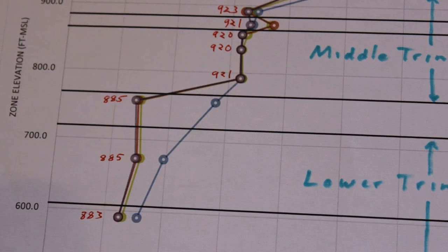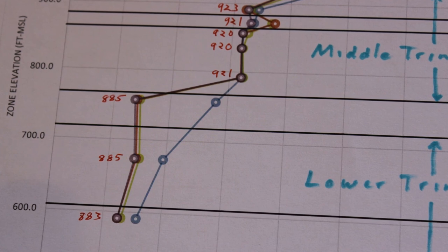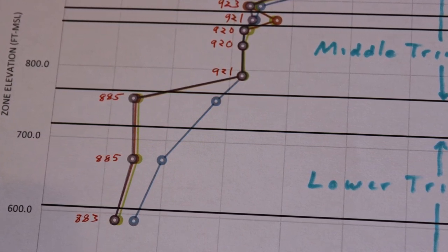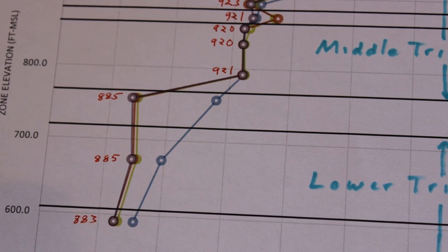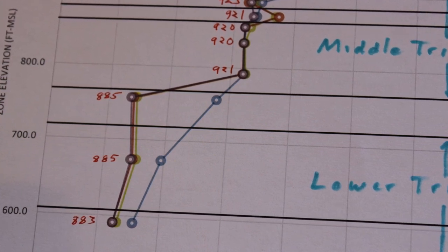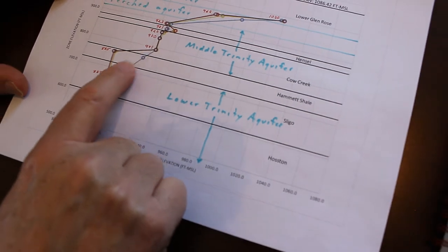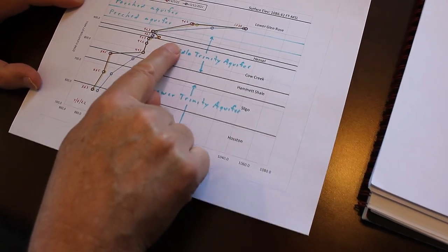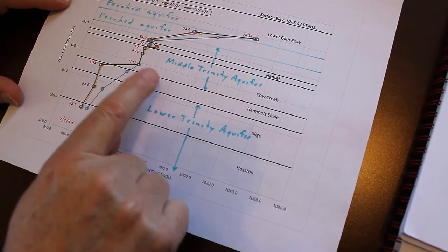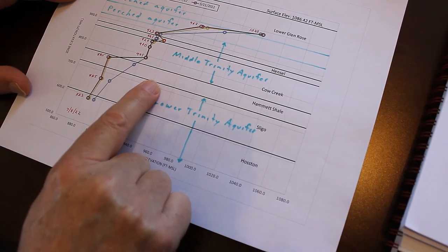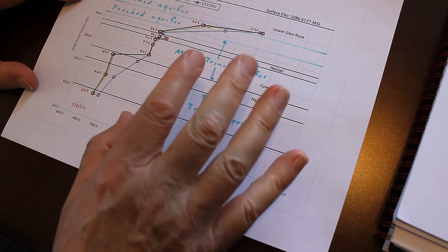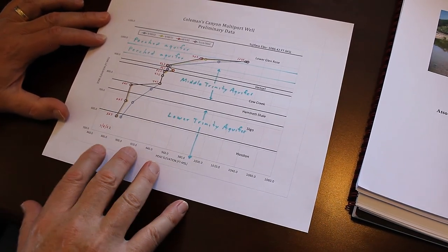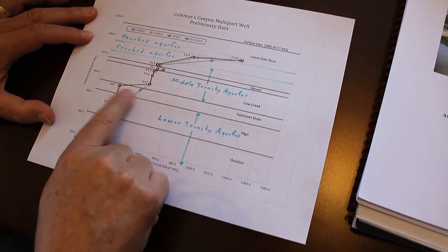Yet as we go down to the Hammett and then particularly into the Sligo of the Lower Trinity, we're seeing elevation values of that head of being 885 feet, again above mean sea level. So we have a 35, 36 foot head difference between this aquifer and this aquifer, only separated by this thin Hammett Shale. That's indicating something significant is going on with these aquifers and these hydrogeologic units to give that much head difference.